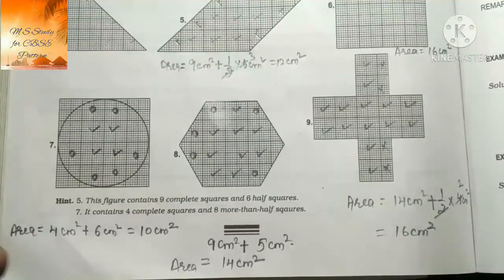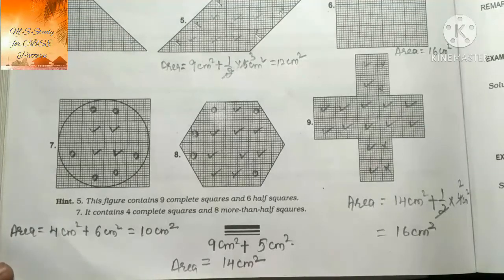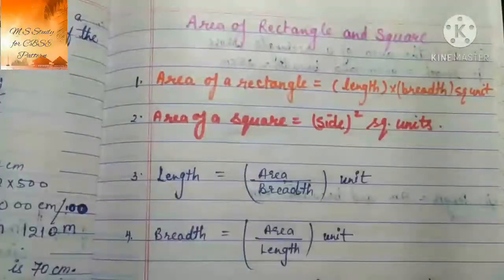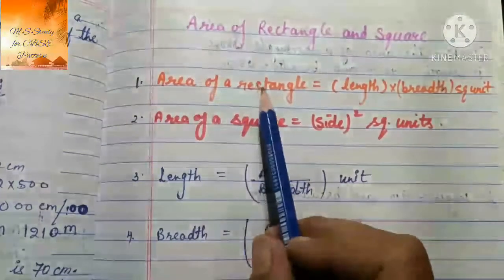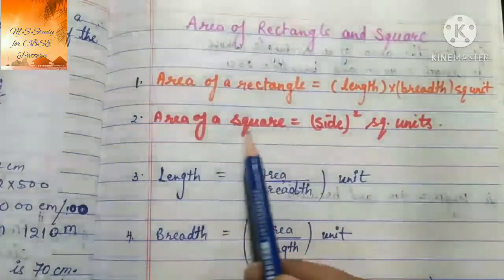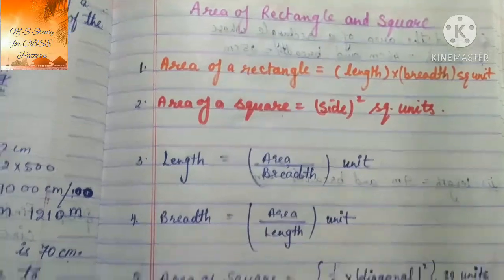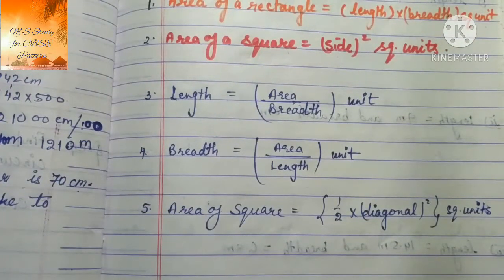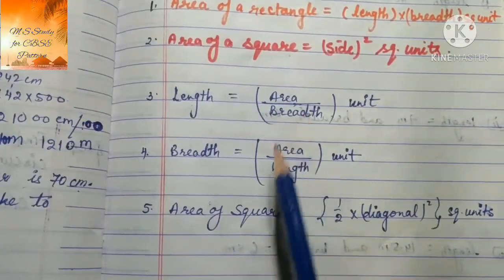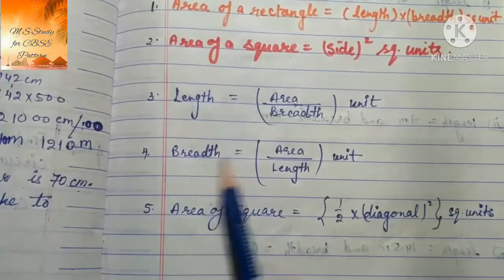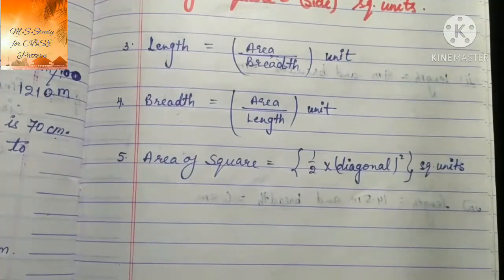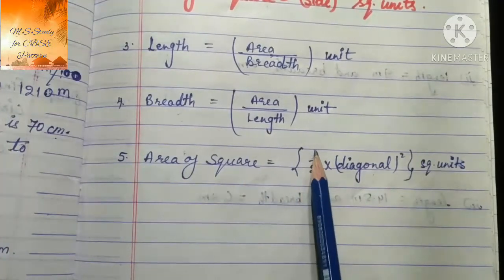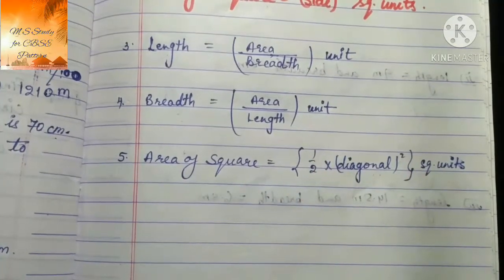उसके बाद हम चलते हैं हमारी next exercise पर जो area पर ही based है, but उसे हमें formula के साथ simplify करना है। Area of rectangle and square निकालना है। Area of rectangle = length × breadth (unit square)। Area of square = side × side। अगर area और breadth given हो तो length = area ÷ breadth। अगर area और length given हो तो breadth = area ÷ length। अगर square की side न दी हो पर diagonal दी हो तो area of square = ½ × diagonal²।